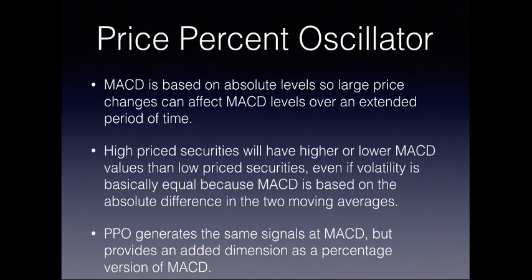What's the difference? The MACD is based on absolute levels. When you have large price changes, they can affect the MACD over extended periods of time, leading to inaccuracies. Also, high-price securities will have higher or lower MACD values than lower-price securities even if the volatility is the same, because the MACD is based on the absolute difference between two moving averages, not the percentage.